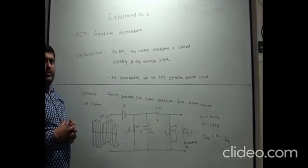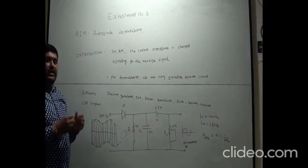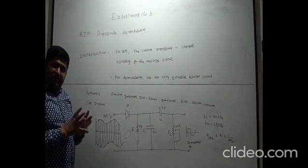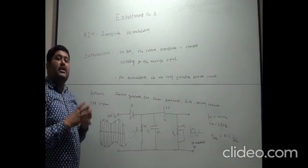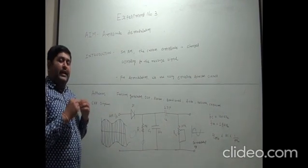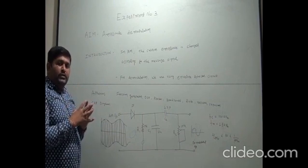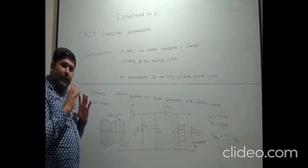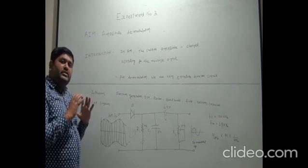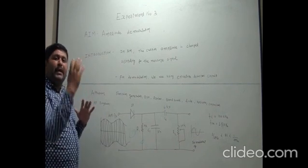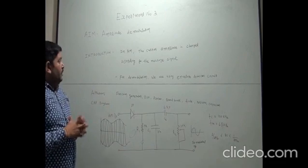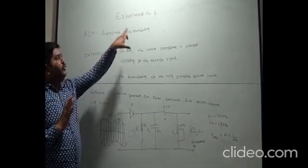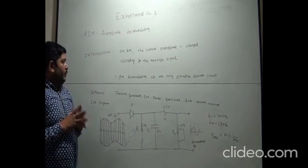In amplitude modulation, the input signal is the message signal and another one is the carrier signal. The message signal is the low frequency signal, the carrier signal is the high frequency signal, and the output of the modulation is the carrier amplitude changed in accordance with the message signal.